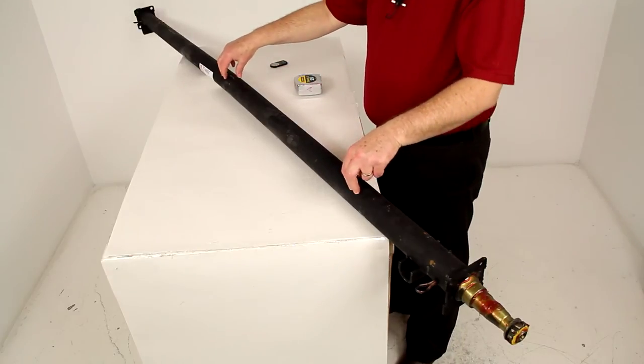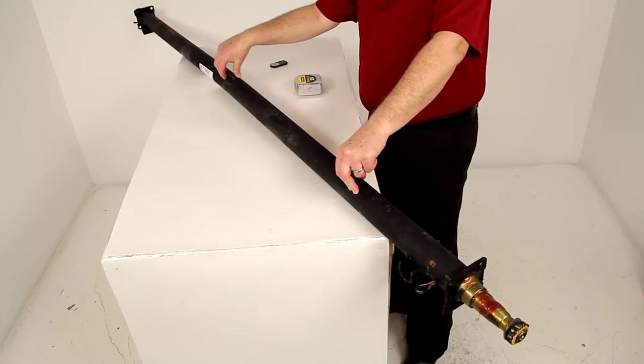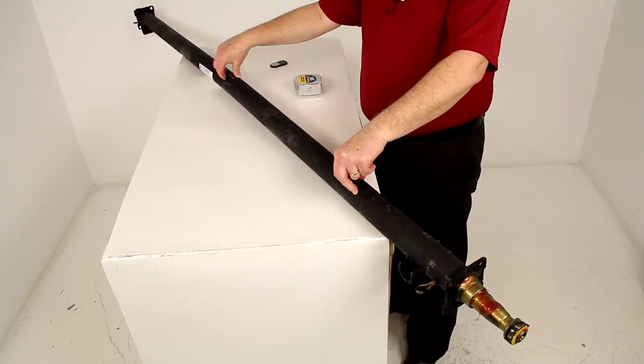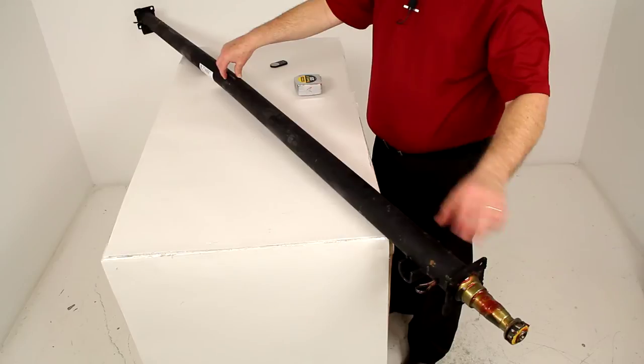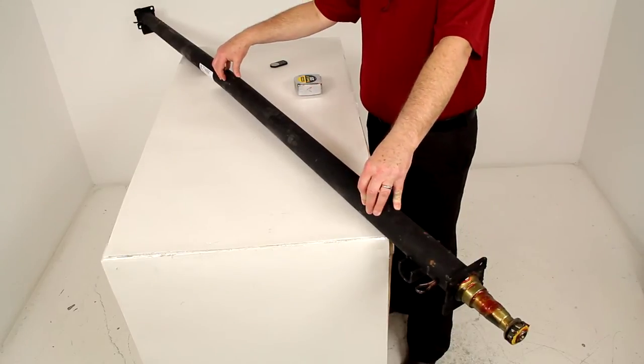Today we're going to review part number T3584F-EZ-8974. This is the Dexter trailer axle with the easy lube spindles and a 3500 pound weight capacity.